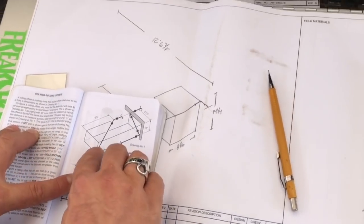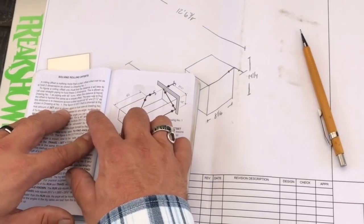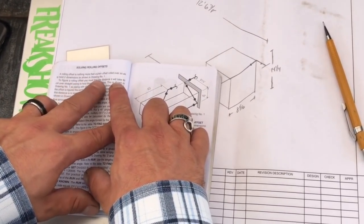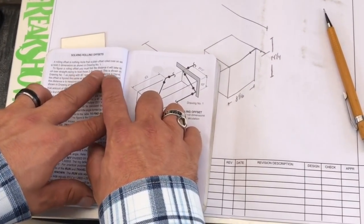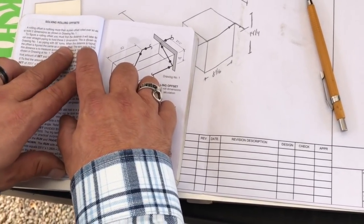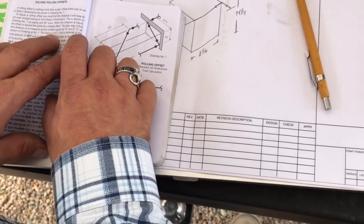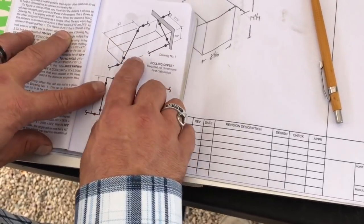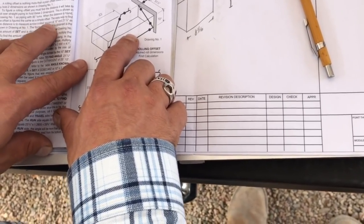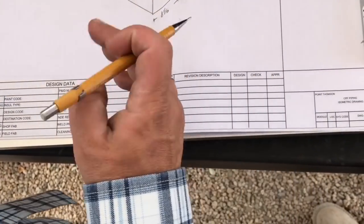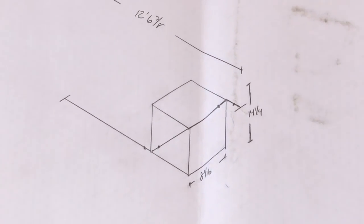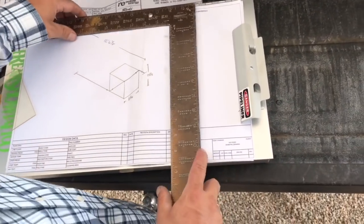Find the amount of travel you need, which is this one here. Rolling offset is nothing more than a plain offset rolled over to hold two dimensions. To figure a rolling offset, you must find the distance it will take to roll over straight piping and hold these two dimensions. The true amount of set - you need to find one across the square as well. Super easy.